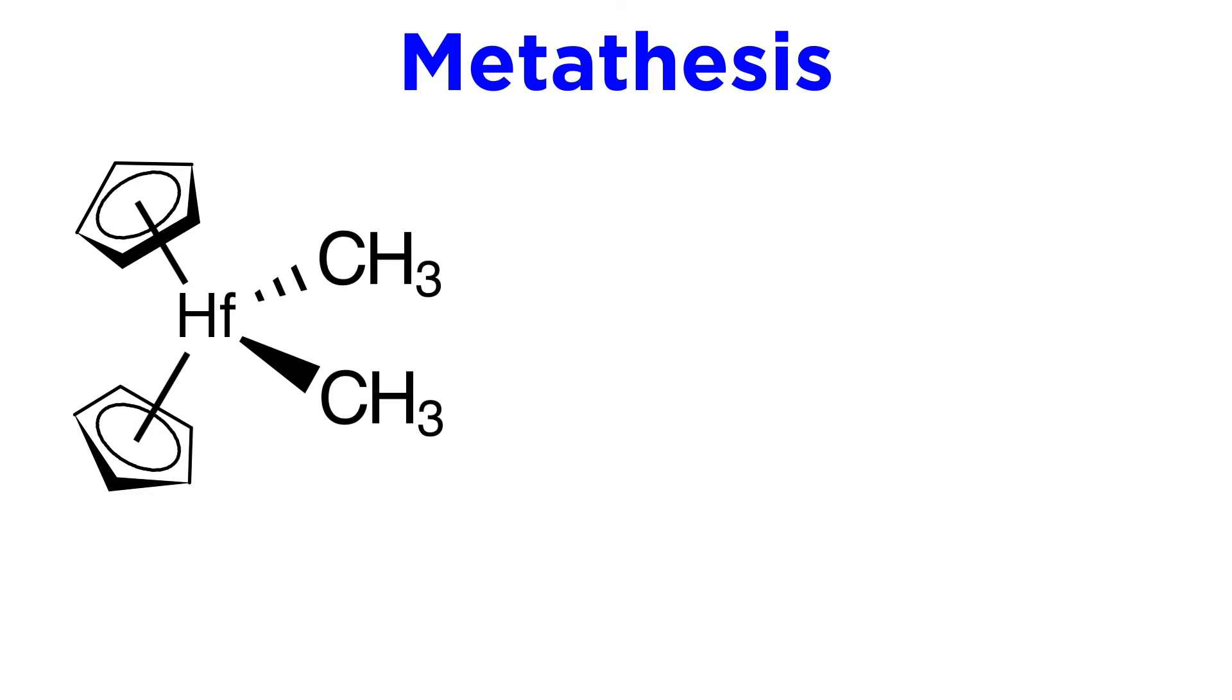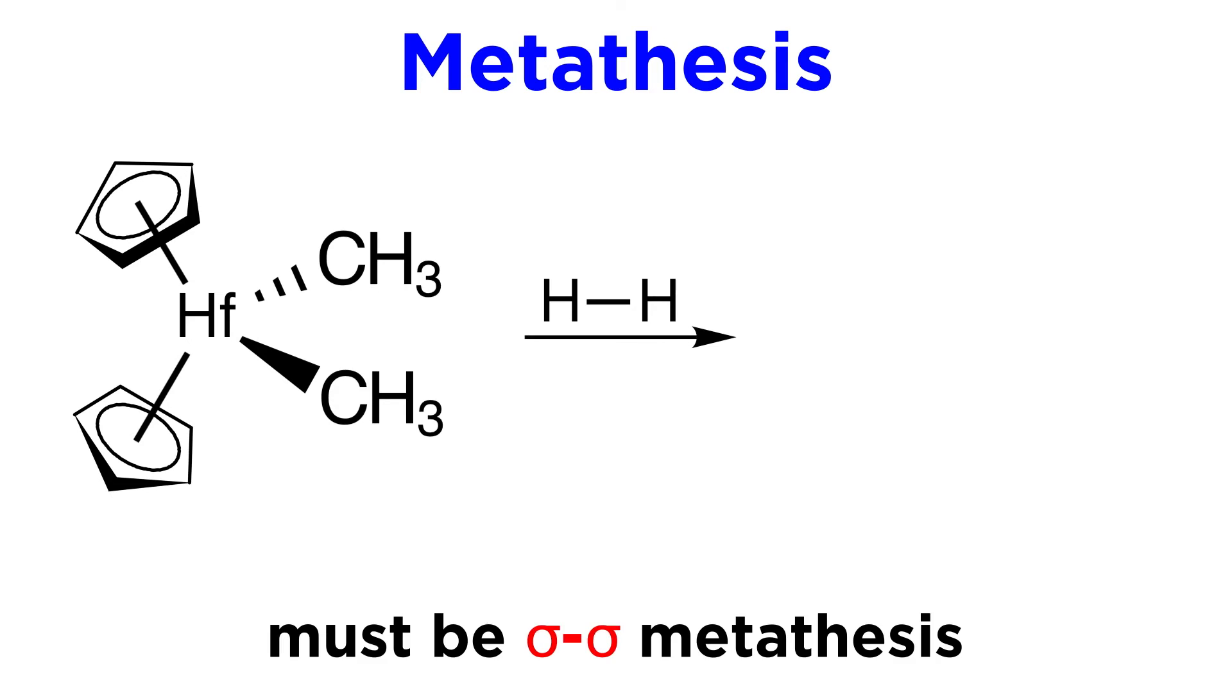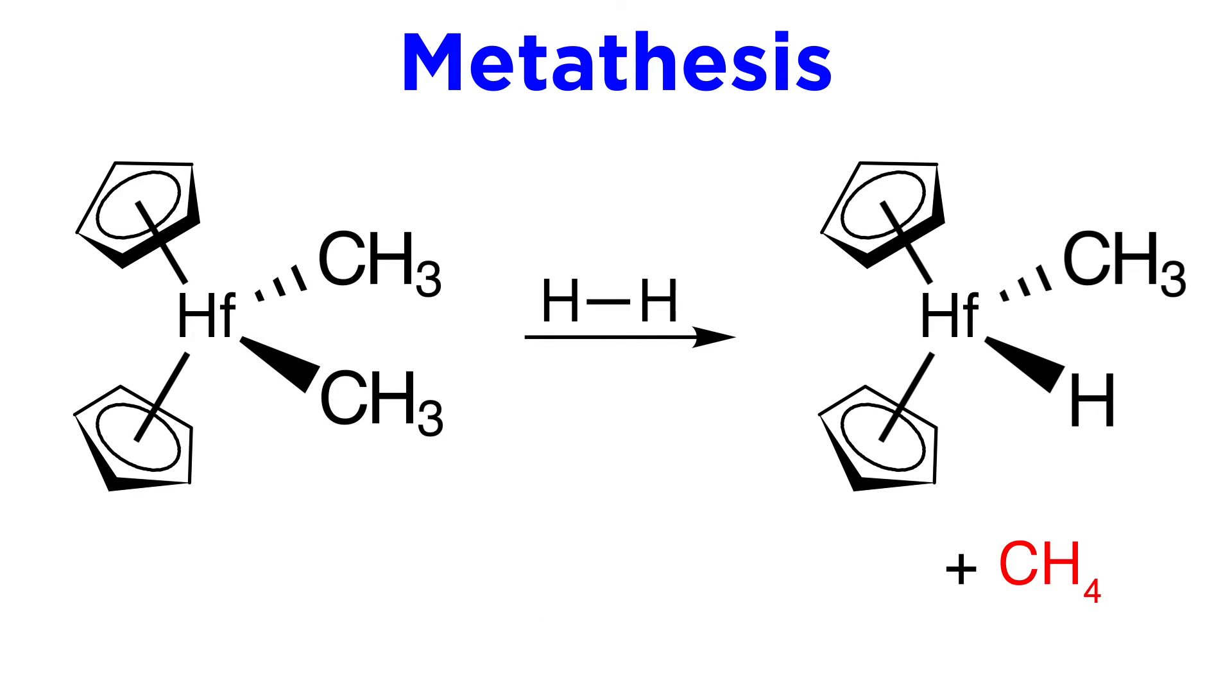Let's go over a couple examples to make sure we have the hang of this. Here's a hafnium complex with two Cp ligands and two methanide ligands. This will react with molecular hydrogen. We have only sigma bonds available, so this will be sigma-sigma metathesis. Let's position hydrogen here next to one of these ligands, and we can see that these sigma bonds will break while these sigma bonds form. As a result, methane has been liberated, and one of the methanide ligands has been replaced with a hydride.